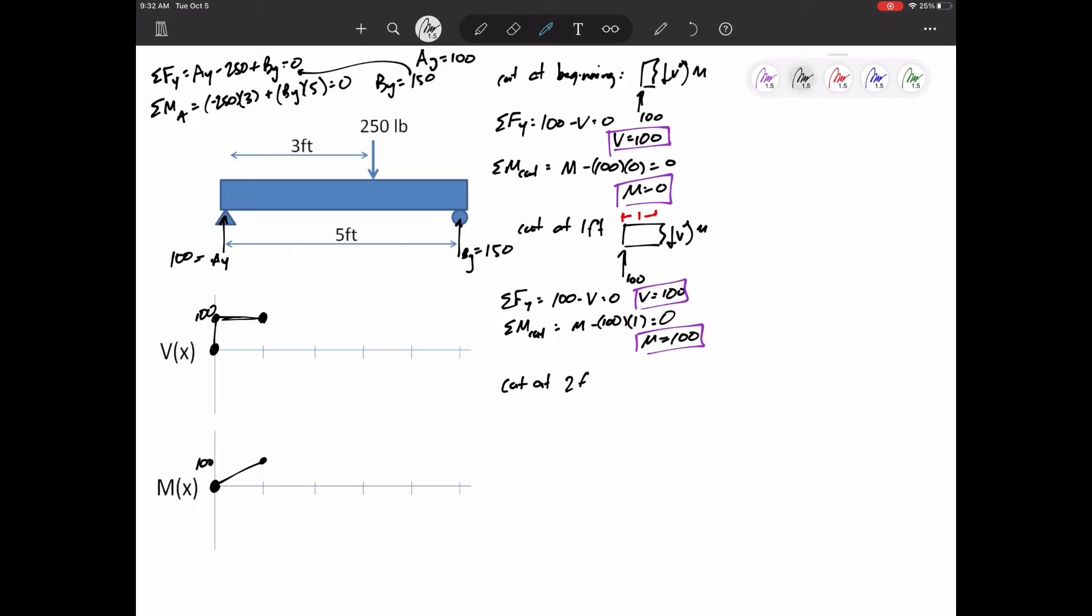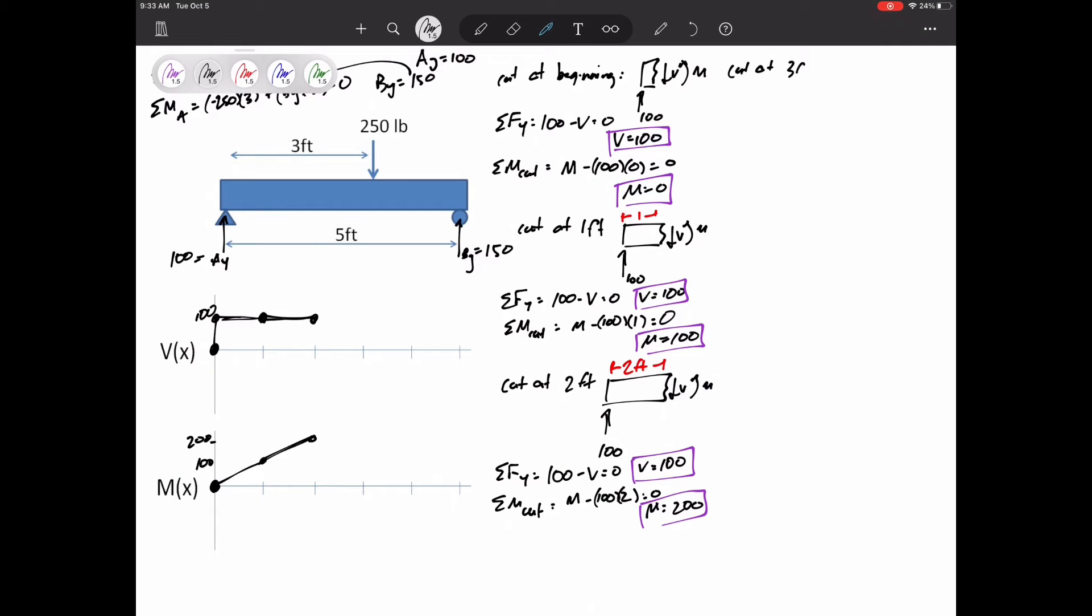So here we could cut it at the very beginning, we could cut it at one foot, two foot, three foot. Here when we look, I'm going to cut it at the three foot section, but I'm going to cut it at three foot before the 250 pound force, and I'm going to cut it at three feet after the 250 pound force. So you could pause this and look at these calculations, but this is the long way, right? We're not going to want to do this cutting it at every location.